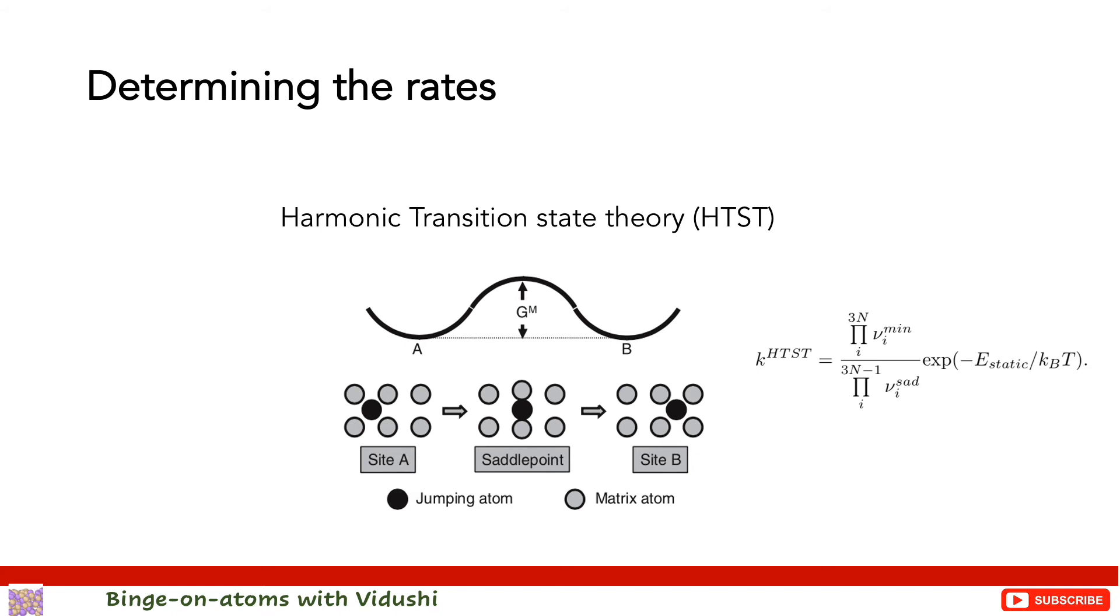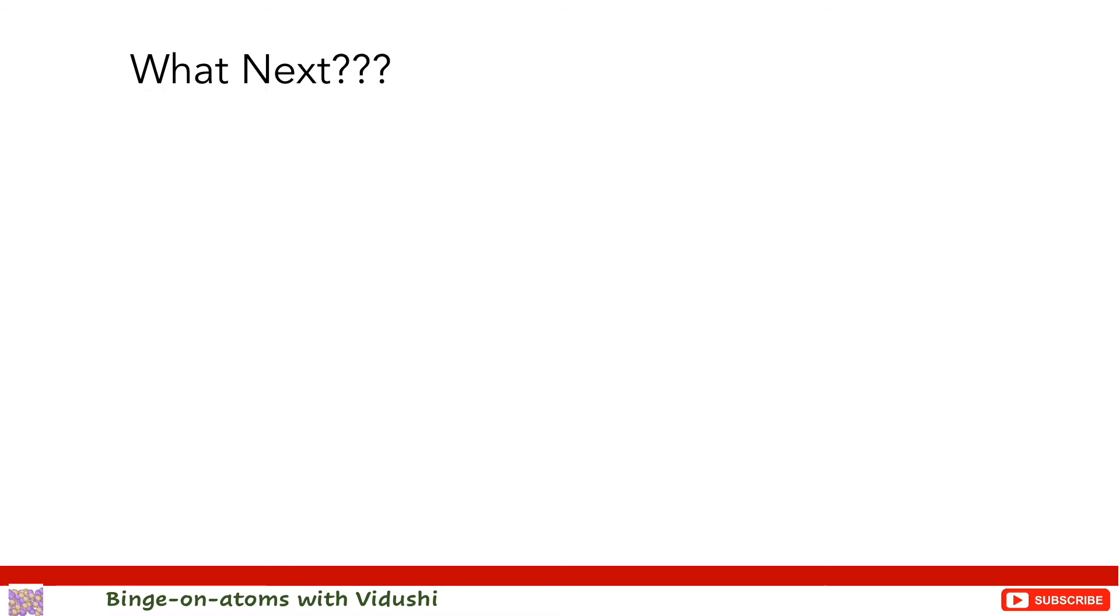And next, the energy basin minimum. The saddle plane is a dividing surface that separates the energy basins. With this, the rate constant is derived as k_HTST. Here E_static is energy barrier or saddle point, and the prefactor consists of vibrational frequencies in the direction of movement and usually lie in the range of 10^12 to 10^13 inverse seconds.